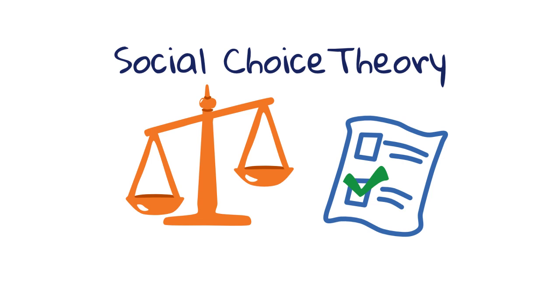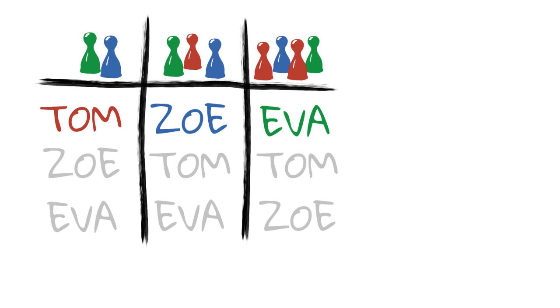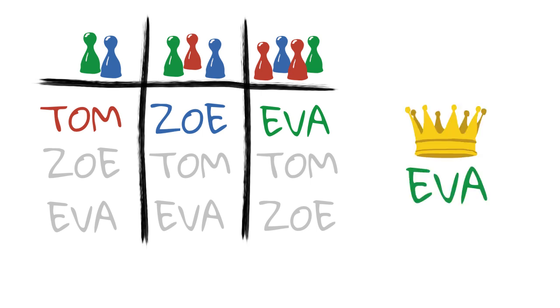Let's look at a toy example. Say we have a bowling club with nine members. The members want to elect a president for their club. Tom, Zoe and Eva are up for election. Anonymously, each member votes for their preferred candidate. This is the result. The decision seems clear — Eva obtained the most votes and should therefore be the new president. This is the outcome produced by plurality voting.